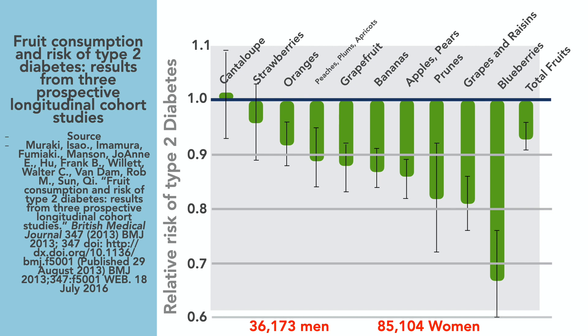And notice, if you notice on the left side, anything above that line potentially increases the chance of diabetes. Everything below the line actually in general lowers the chances of diabetes. Now you notice to the left that cantaloupe or melons for about 50% of people can actually increase their chances of high blood sugar or diabetes. But then you move on to things like strawberries and it begins to lower your chances of diabetes. Then you go on to oranges. It lowers it even more. And then you go to peaches, plums, and apricots. It lowers it more. Grapefruit, bananas, apples, pears, prunes.